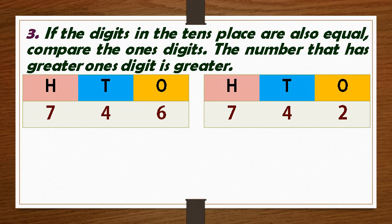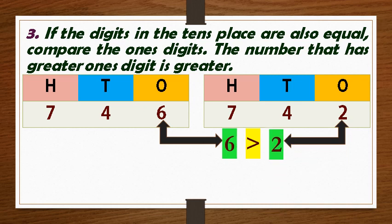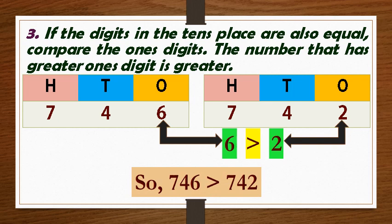If the digits in the tens place are also equal, compare the ones digits. The number that has greater ones digit is greater. In this example, as the hundreds and the tens place of both the numbers are equal, let's compare the ones place. The ones digit 6 in 746 is greater than ones digit 2 in 742. So, 746 is greater than 742.